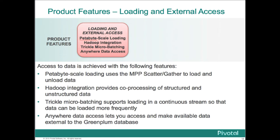To load data and access external data, Greenplum offers a variety of ways. Using scatter-gather technology, Greenplum can perform high-performance loading and unloading of data, and with each additional node in the cluster, the speed of parallel data ingest and output increases linearly. Greenplum database provides high-performance parallel import and export from Hadoop clusters. When data is coming in a continuous stream, micro-batching allows data to be loaded at frequent intervals — such as every five minutes — while maintaining extremely high data ingest rates. In addition, external web tables allow access to external data sources.